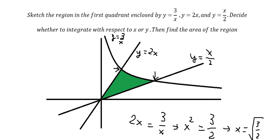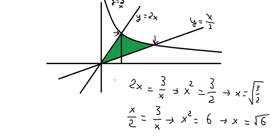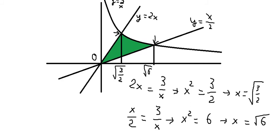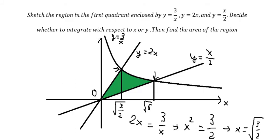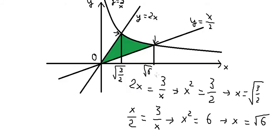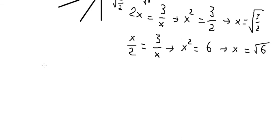Now we can split the area into two parts. The first integral goes from 0 to the square root of 3 over 2, and the second integral goes from the square root of 3 over 2 to the square root of 6.